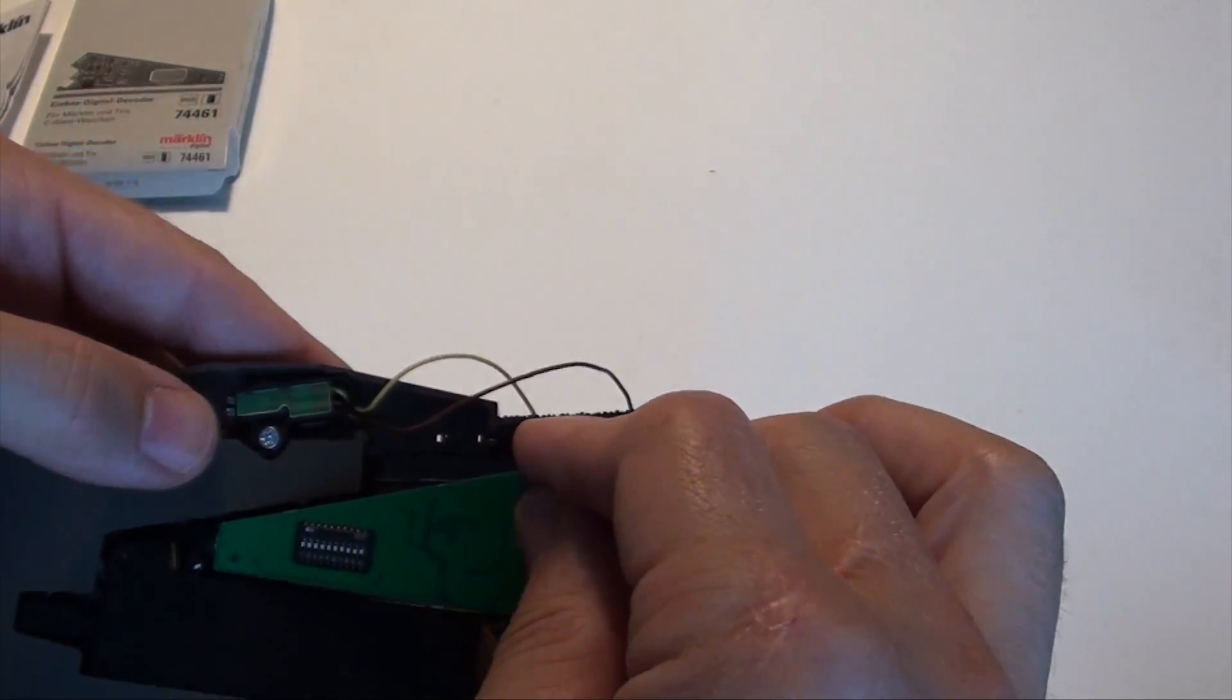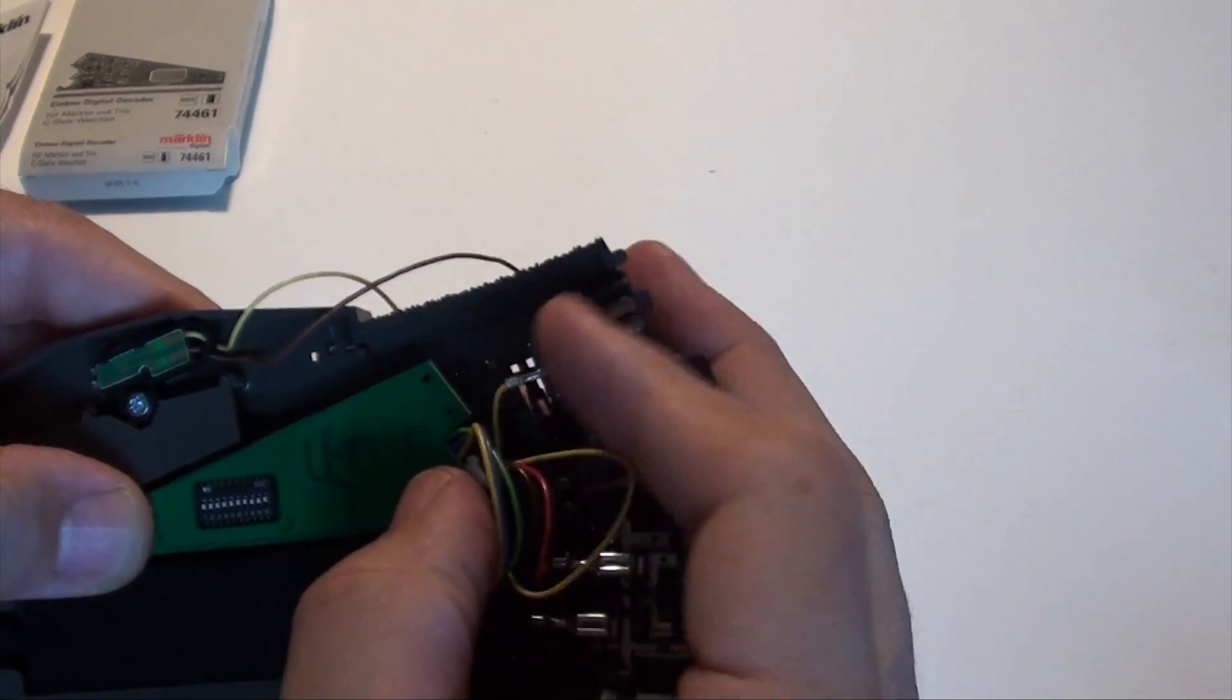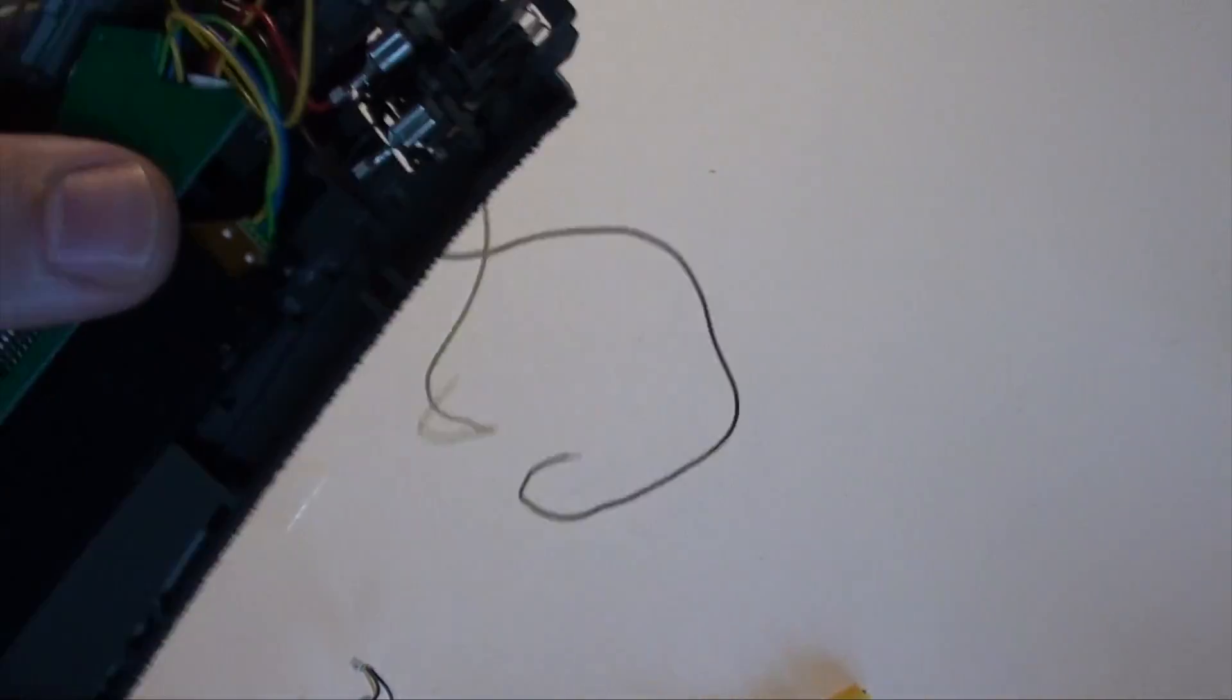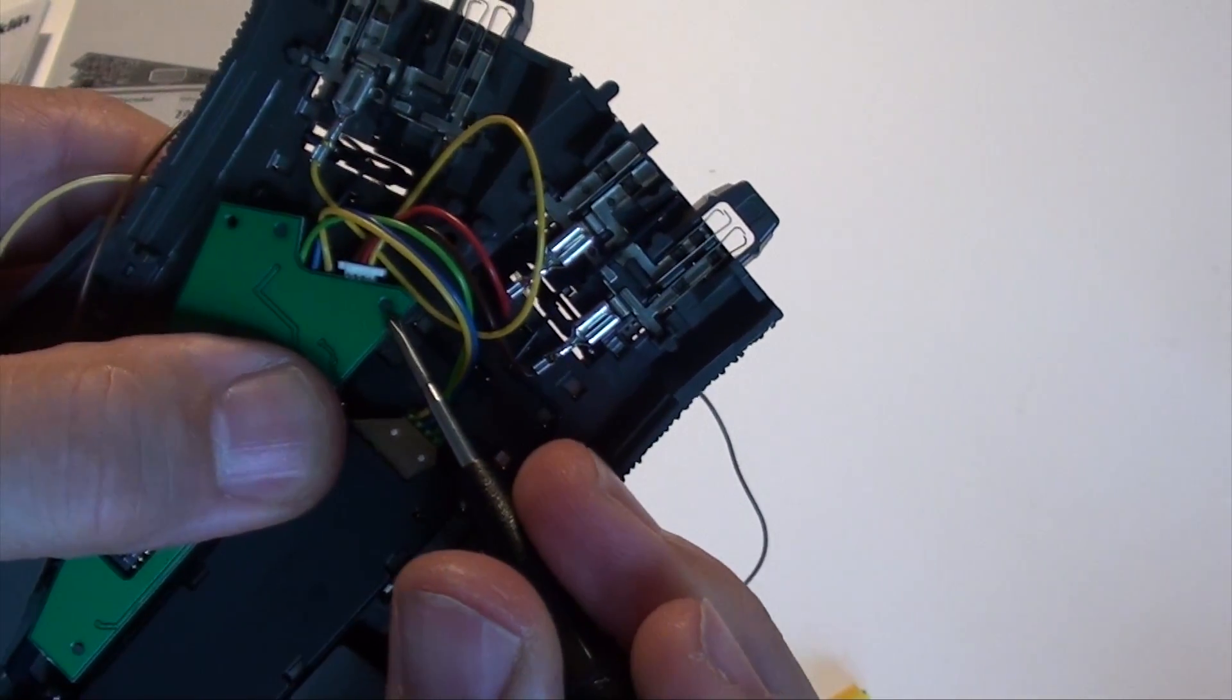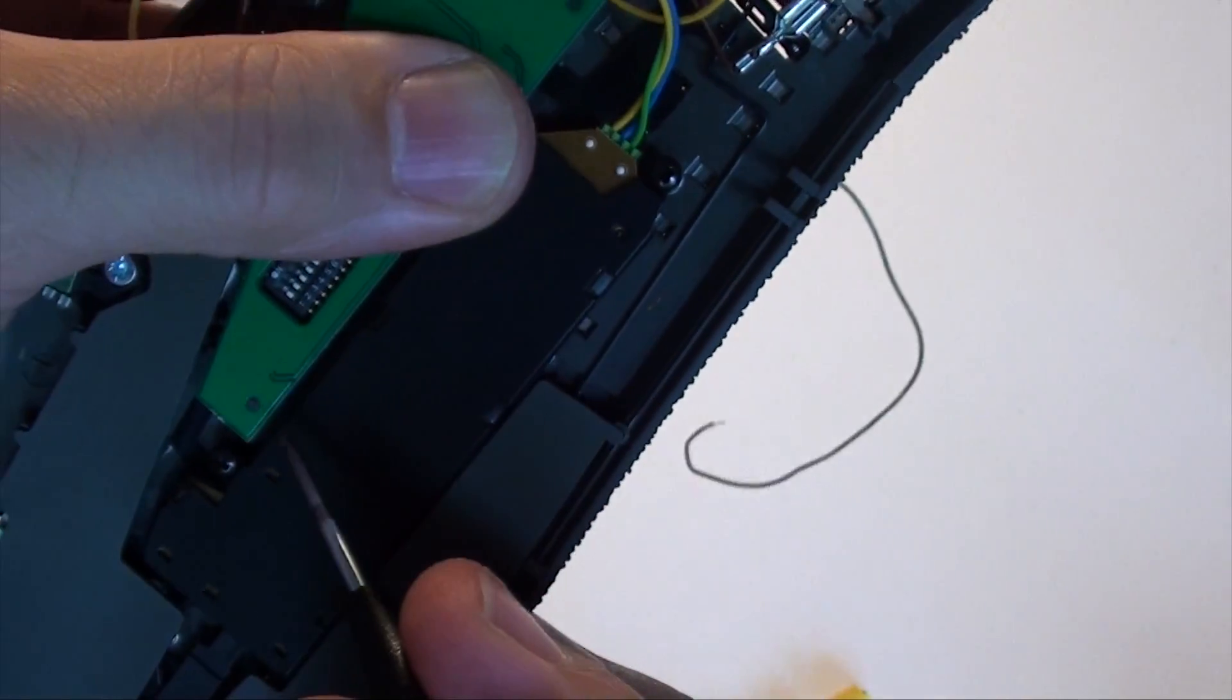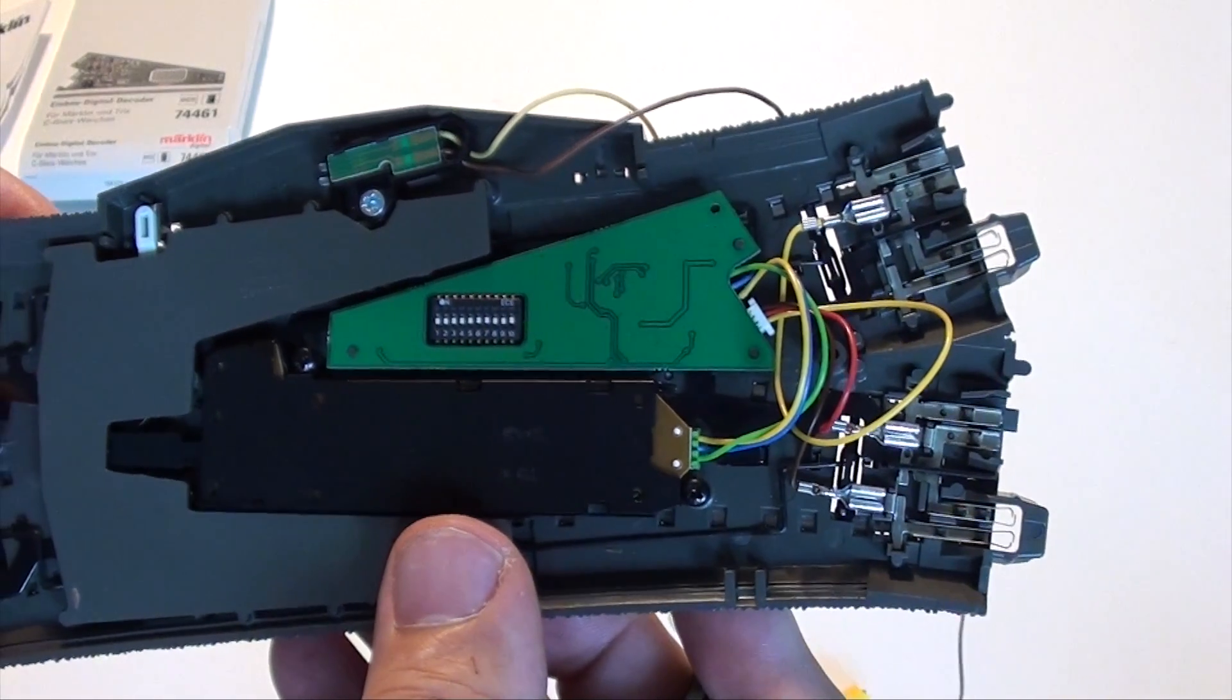The circuit board aligns with three tiny little pins in the bottom of the C track and it just clips in place. You can see here, there's one pin sticking through the circuit board, the second pin, and finally the third pin. And that's all that keeps it in place.